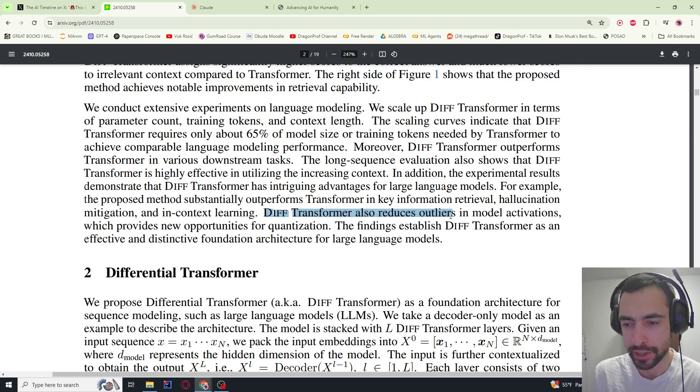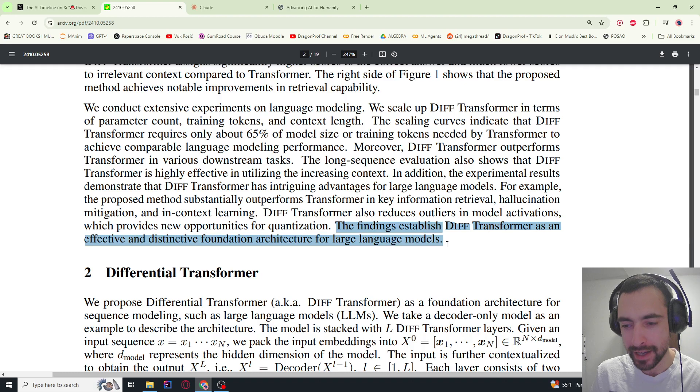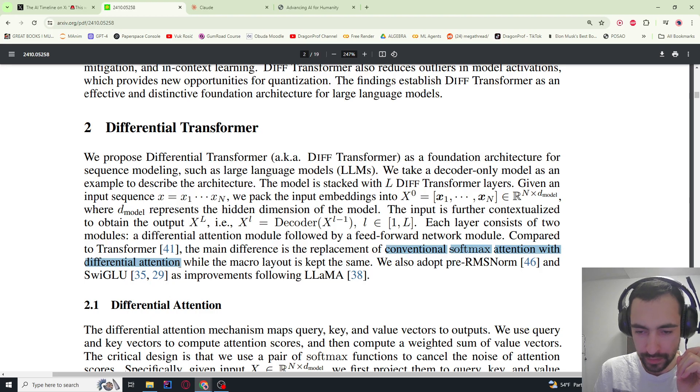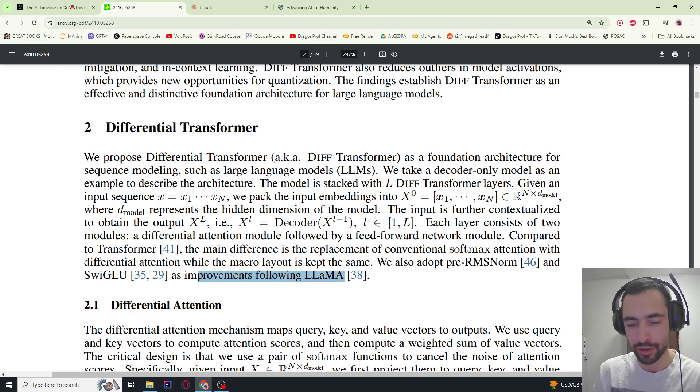It's also better in key information retrieval, hallucination mitigation, and in-context learning. It helps reduce outliers in model activations which provides new opportunities for quantization. I talked about outliers and quantization in my previous video about sage attention. The main thing they do is replace conventional softmax attention with differential attention. They also add pre-RMS norm and SwiGLU as improvements following LLaMA. This is not their invention—their invention is this differential softmax thing.